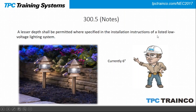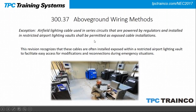Section 300.37 on above-ground wiring methods addresses airfield lighting. A new exception states that airfield lighting cable used in series circuits powered by regulators, installed in restricted airport lighting vaults, is permitted to be exposed. Most of this wiring was probably already exposed, so this exception now provides code coverage for that practice.